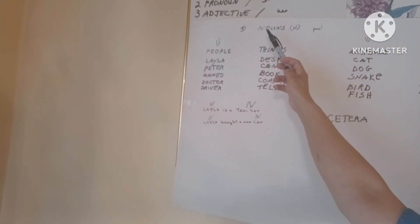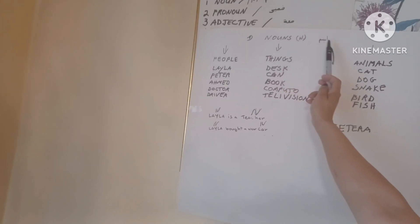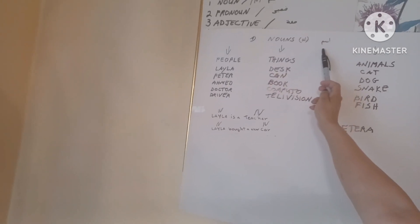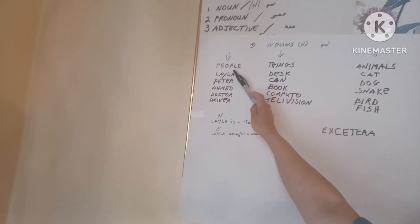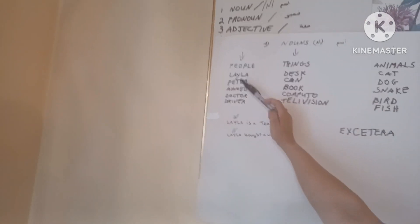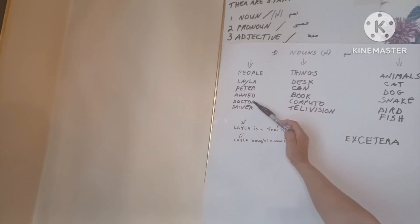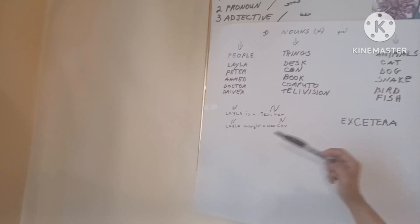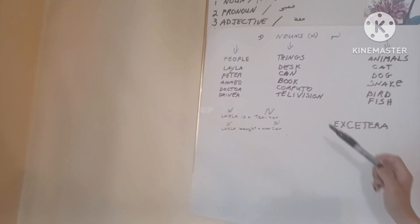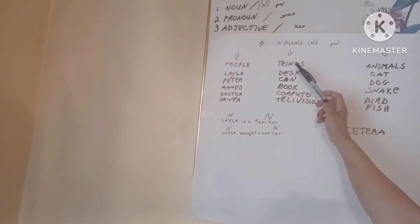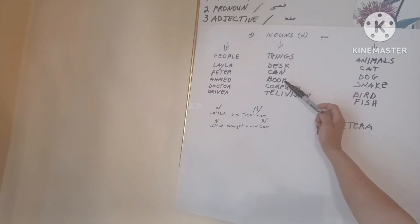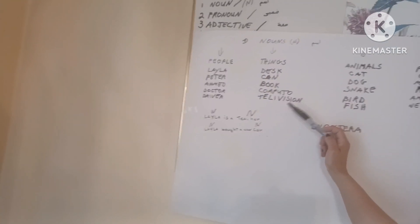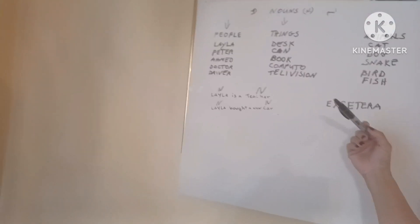The first part of the noun is the names of people — Leila, Peter, Ahmed, doctor, driver, etc. Also things — ashiya — disk, can, book, computer, TV, etc.